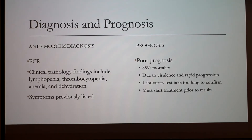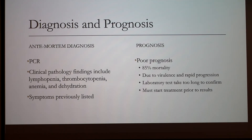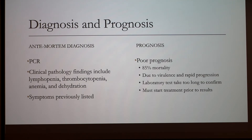For ante-mortem diagnosis, a real-time PCR assay can specifically detect EEHV1 and evaluate whole blood samples as well as trunk wash samples. Clinical pathology indicators include lymphopenia, dehydration, and anemia. The survival rate is very low with an 85% mortality rate for several reasons: the virus is extremely virulent, the disease progresses rapidly, and laboratory diagnosis can take more than 24 hours, yet death occurs within 24 hours.